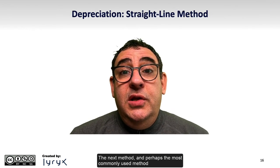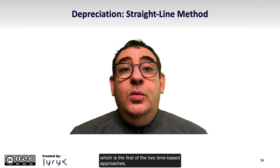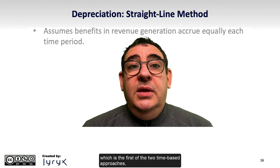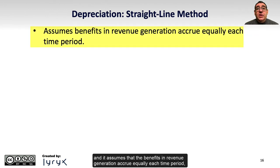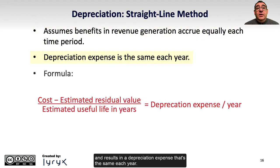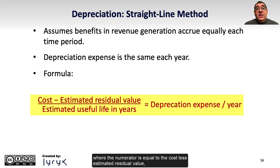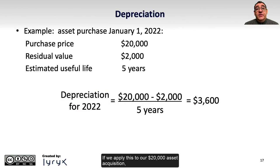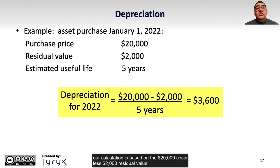The next method, and perhaps the most commonly used method of depreciation, is the straight-line method — the first of the two time-based approaches. It assumes that the benefits and revenue generation accrue equally each time period, resulting in a depreciation expense that's the same each year. The formula is similar to units of production, where the numerator is cost less estimated residual value, but now we divide by the estimated useful life in years, giving us the annual depreciation expense. Applied to our $20,000 asset, the calculation is $20,000 less $2,000 residual value, divided by the five-year estimated life, resulting in $3,600 in annual depreciation expense.